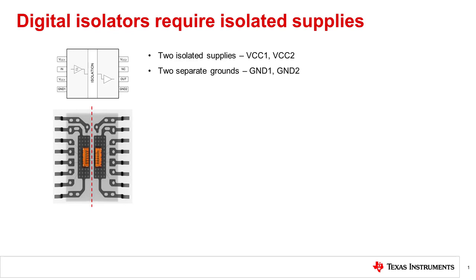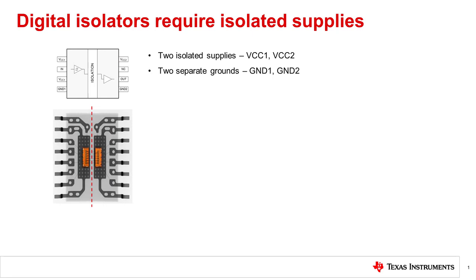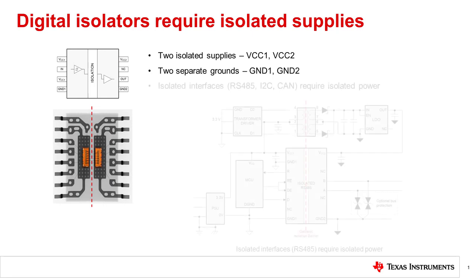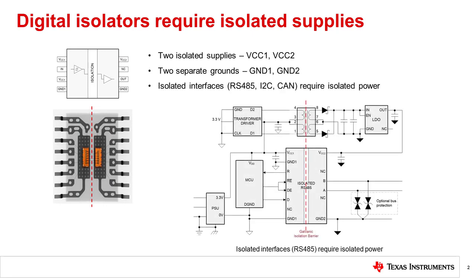Digital isolators require a separate power supply on primary and secondary sides of the device, as each side must have power for both the internal die with no physical connection between the two. This requirement is independent of whether a device supports basic or reinforced isolation and applies to digital isolators as well as isolated devices with integrated interfaces.